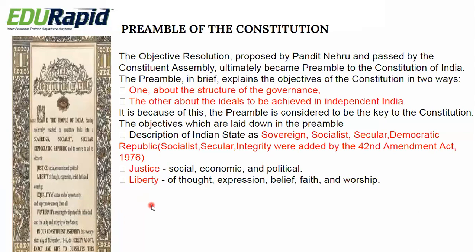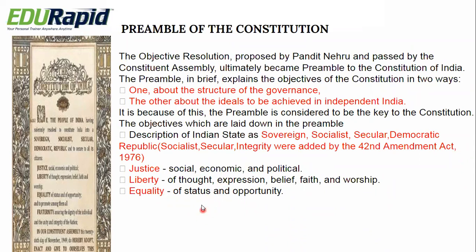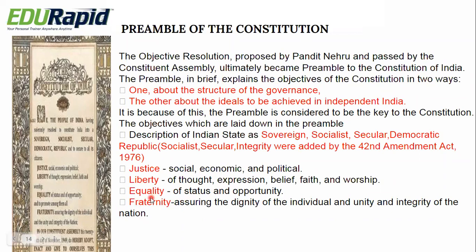The preamble also sets objectives to be achieved in independent India. Justice — social, economic, and political justice to all Indian citizens. Liberty — liberty of thought, expression, belief, faith, and worship. Equality — equality of status and opportunity to all citizens of India. These objectives are included in the fundamental rights, which we will study in detail later. And fraternity — the spirit of brotherhood — assuring the dignity of the individual and the unity and integrity of the nation.